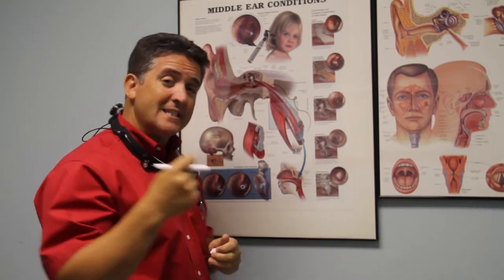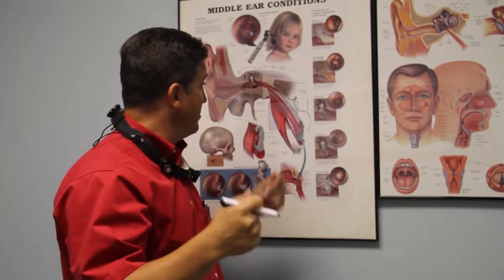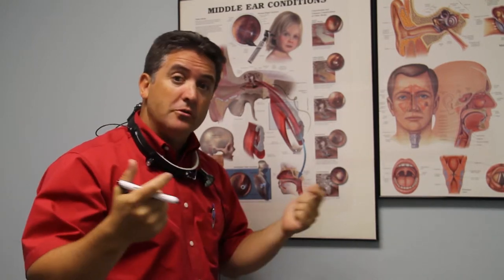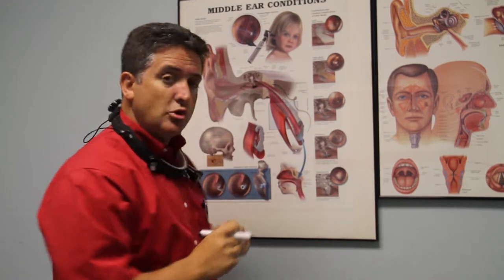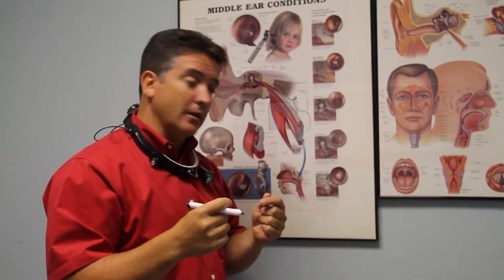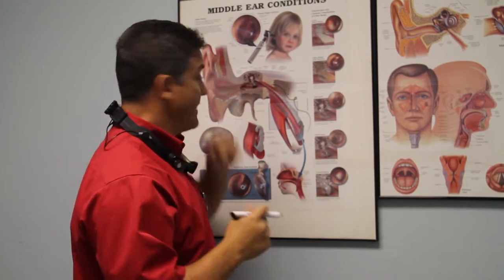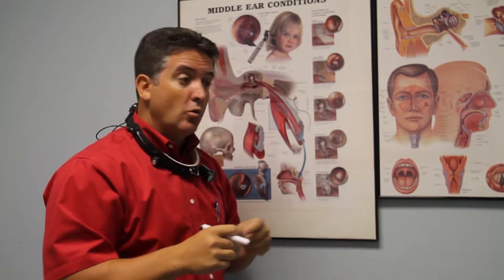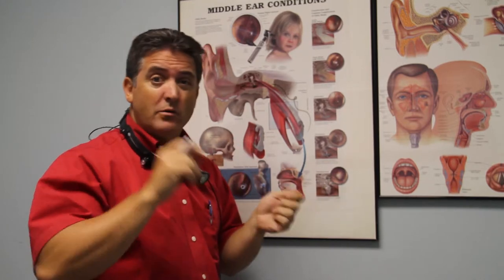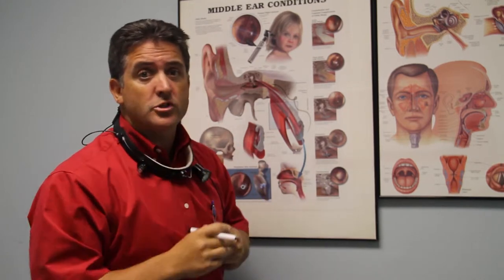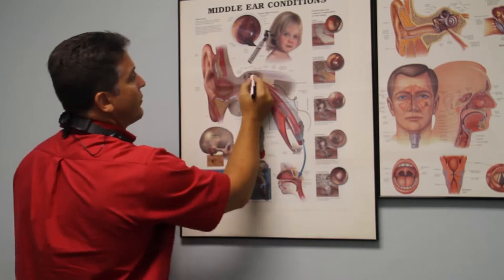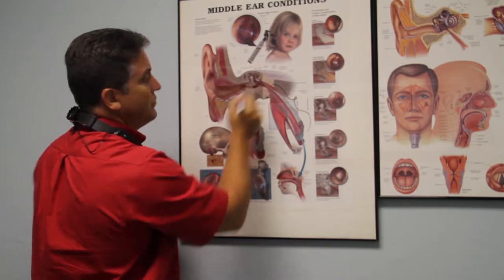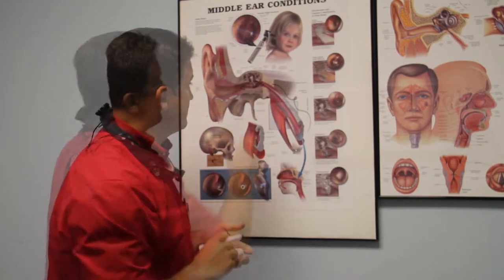And once you get fluid out of the middle ear, this middle ear space is much more resistant to infection. So if you take an example of a kid who gets six or more ear infections a year, you put tubes in and typically that child would probably see somewhere on the order of zero to maybe one or two ear infections per year, because we got rid of all that fluid that was stuck in the middle ear space.